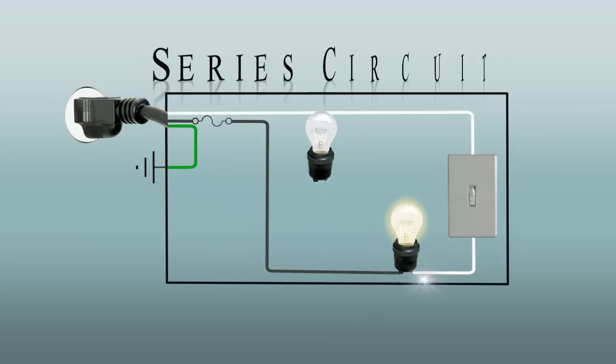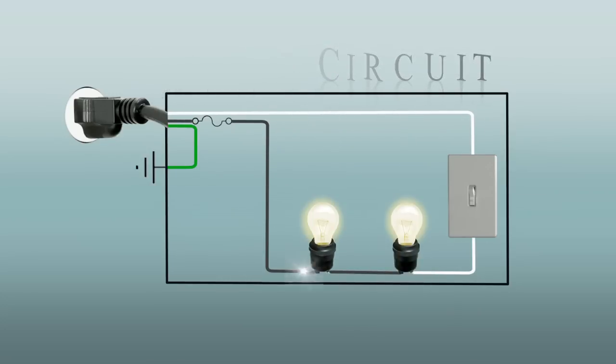Series circuits are formed when two or more components or loads which offer resistance to the circuit are placed in series. When a problem such as the ones I described earlier happens, the entire circuit fails.